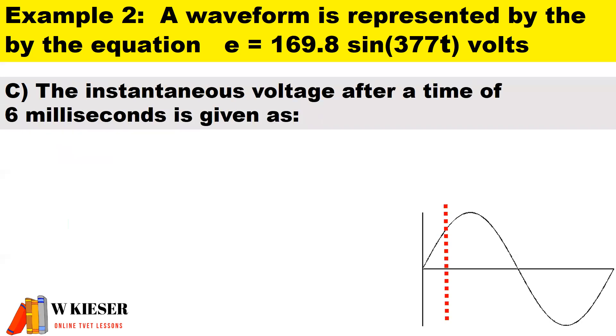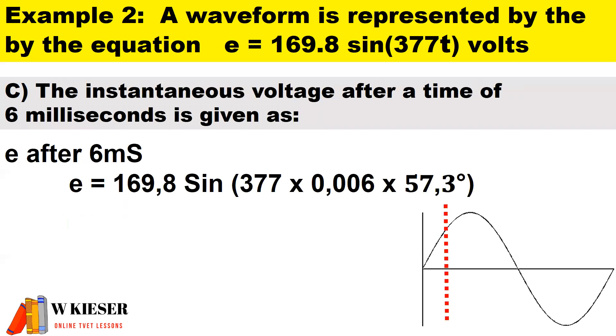In the third part of this example we need to calculate the instantaneous voltage after a time of 6 milliseconds. Don't forget that 6 milliseconds converted to seconds we can divide by 1000 or multiply by 10 to the minus 3. To convert radians per second into degrees we multiply by 57.3 inside of the brackets. Therefore the instantaneous value is 169.8 which is the maximum value sine, and inside of the brackets we multiply 377 times 6 milliseconds and then times 57.3. Therefore the instantaneous value at 6 milliseconds is 130.8 volts.